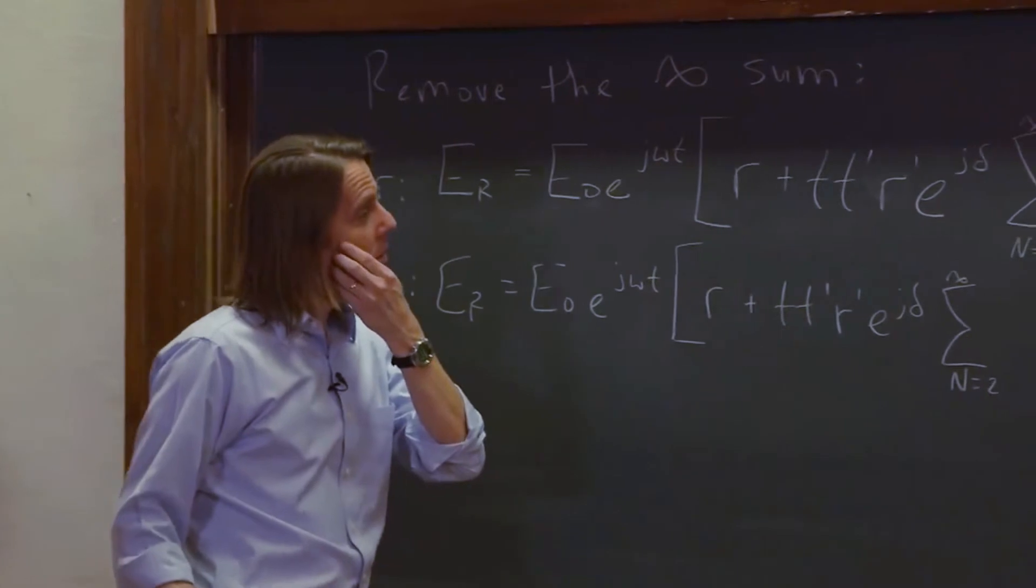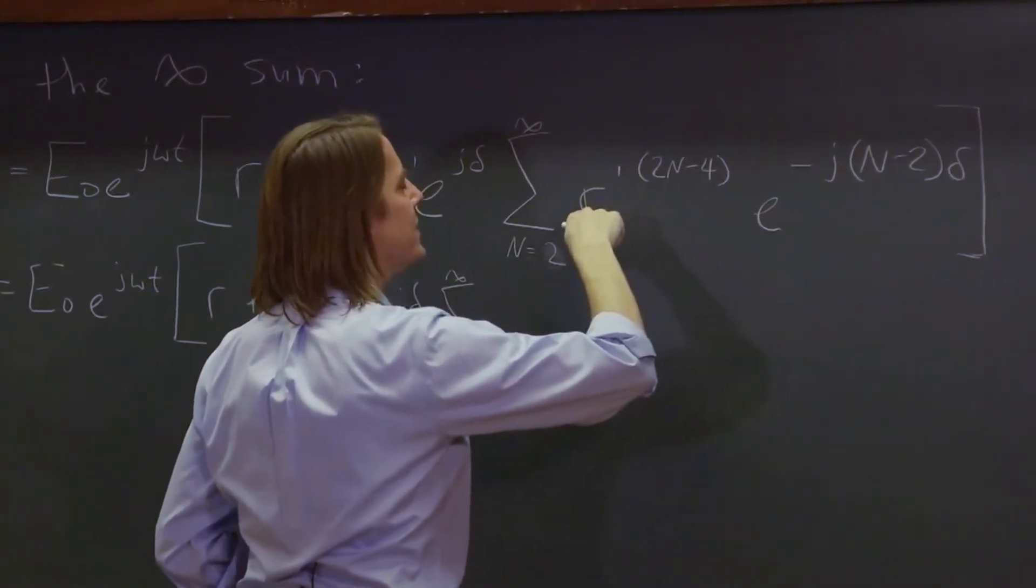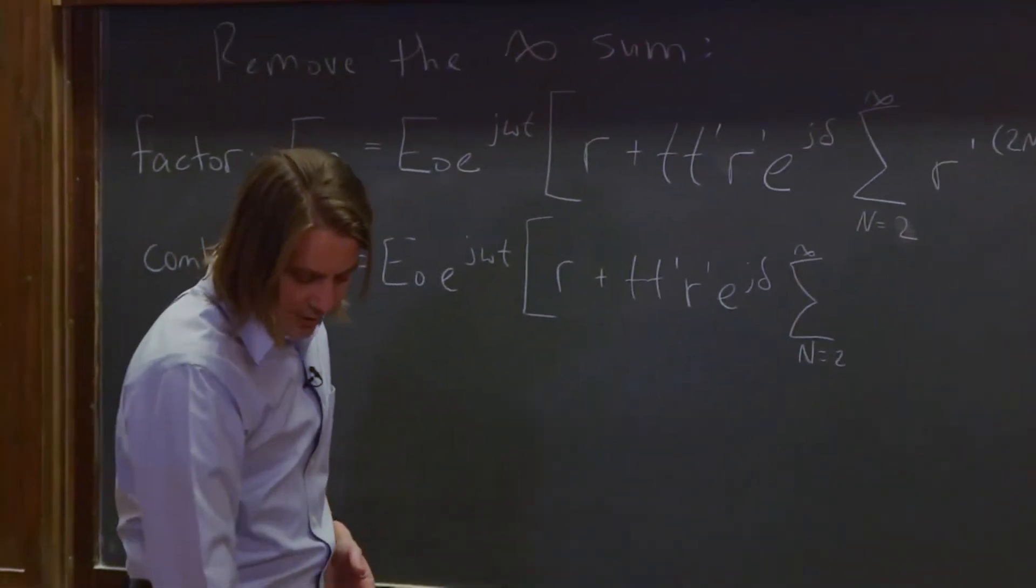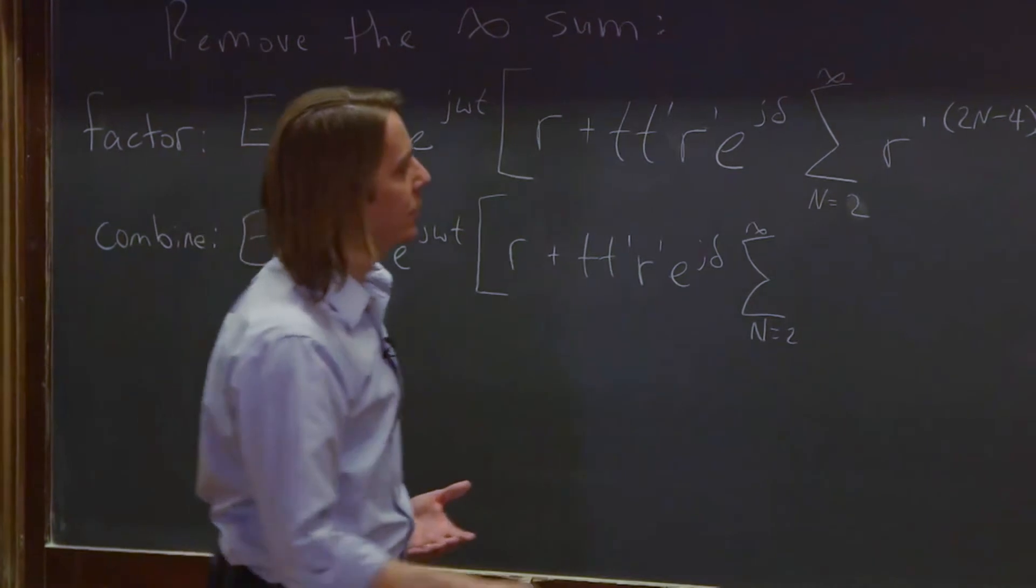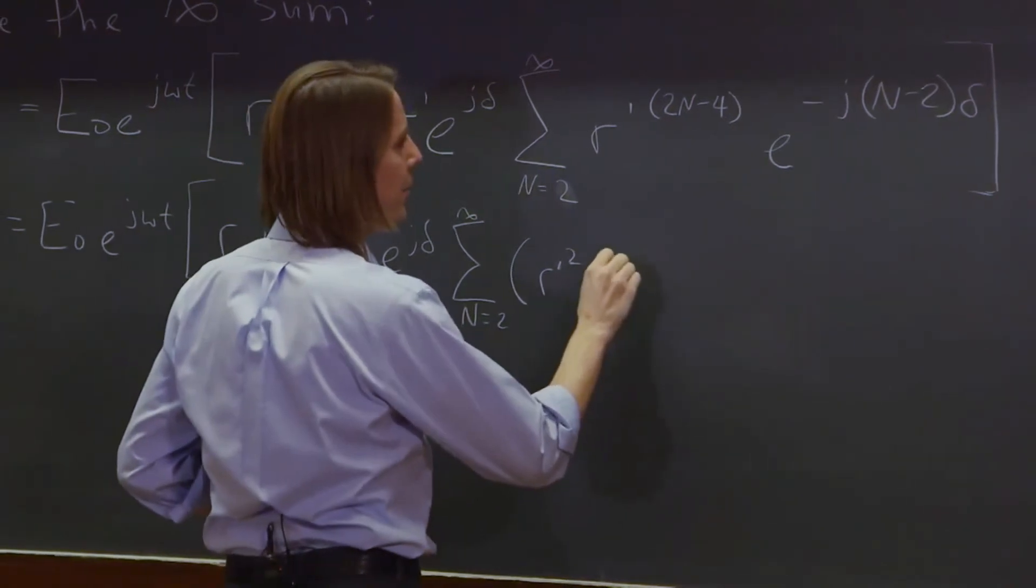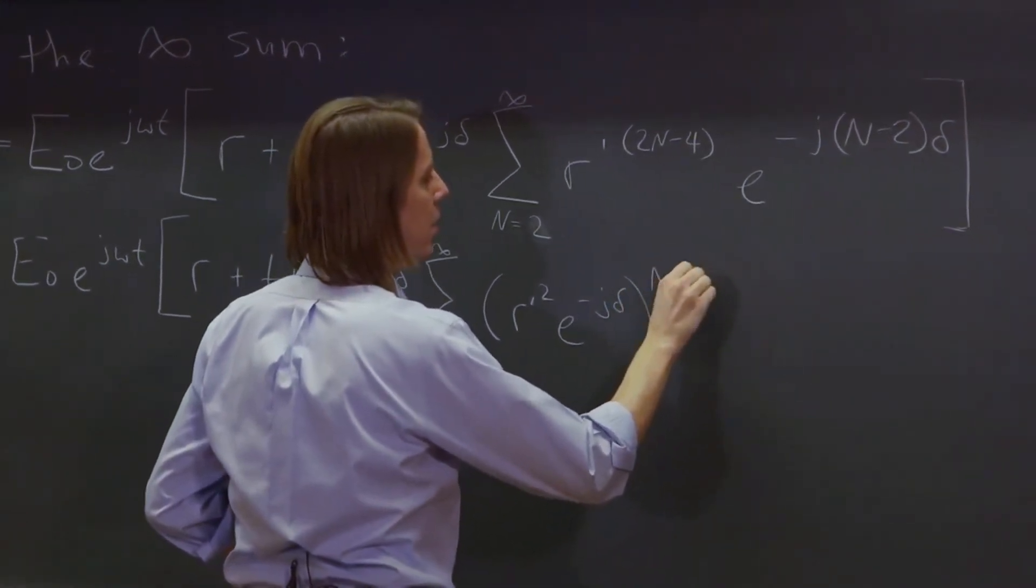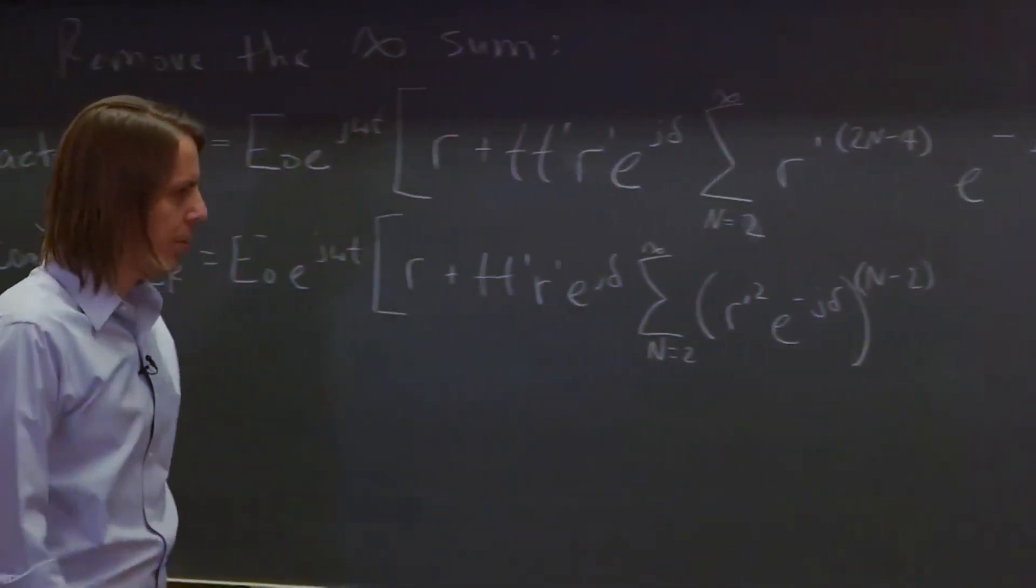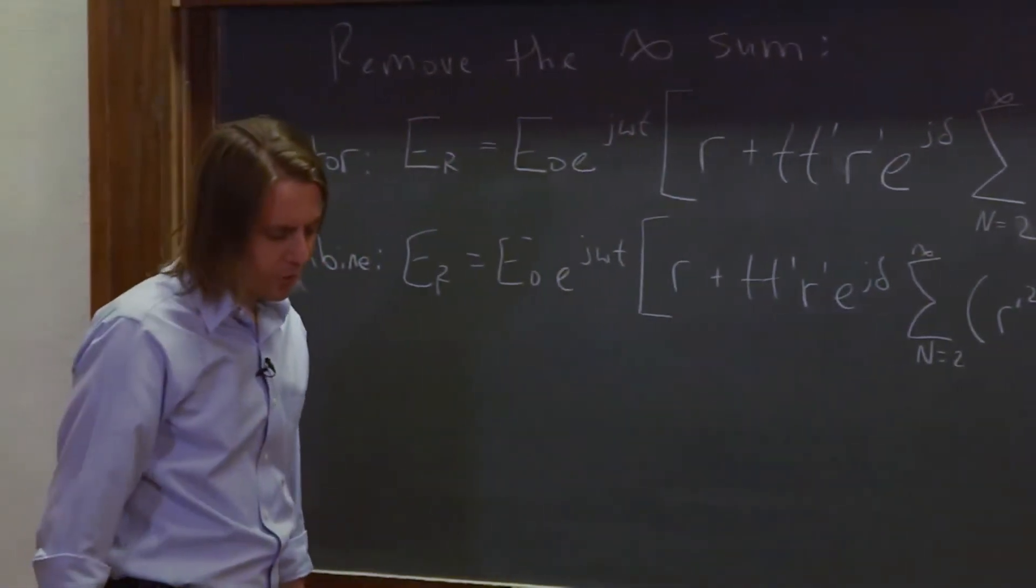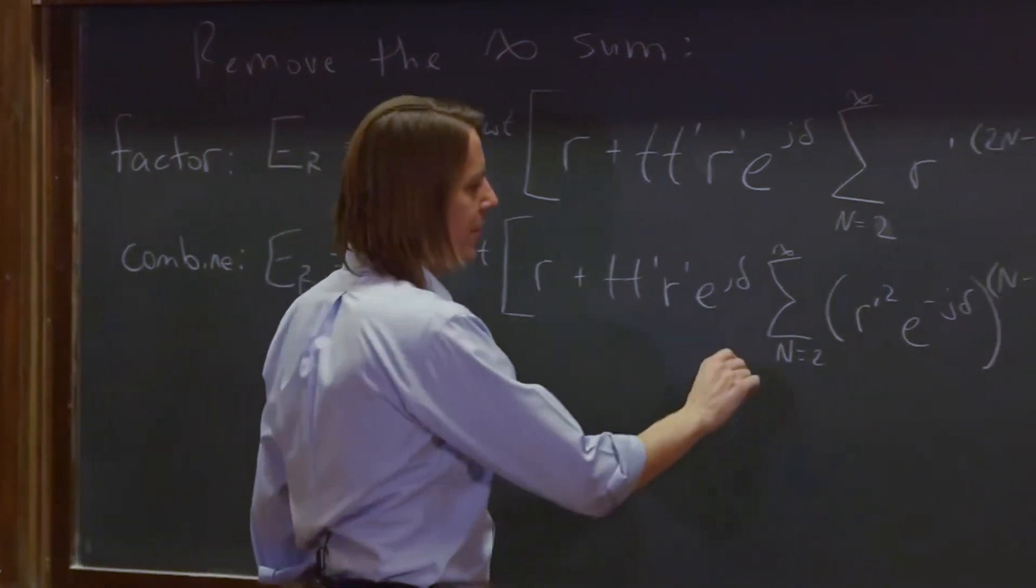And now notice this is to the 2N minus 4, and this is to the N minus 2. So this is twice this one. So we could write this as R prime squared to the N minus 2. And then suddenly, they are to the same factor. So what we're going to do is on the inside, put R prime squared there, E to the minus J delta, and then they're both to the N minus 2 power, like that. So we combined those terms into one term.